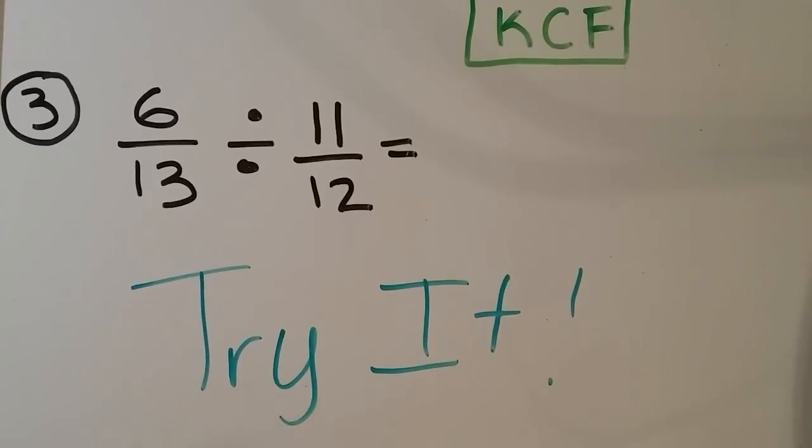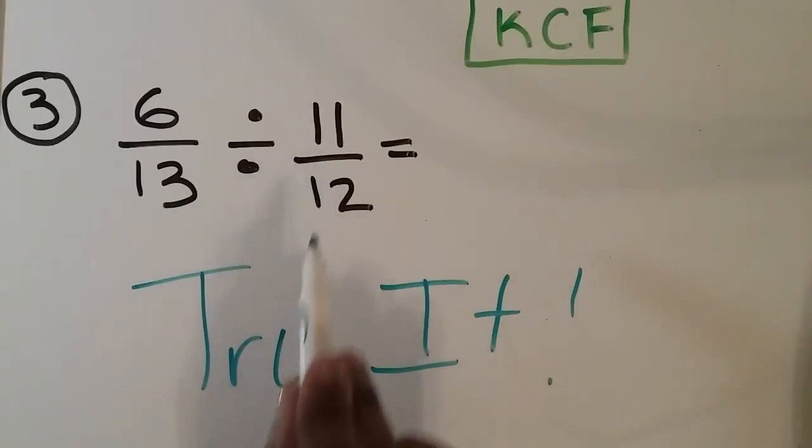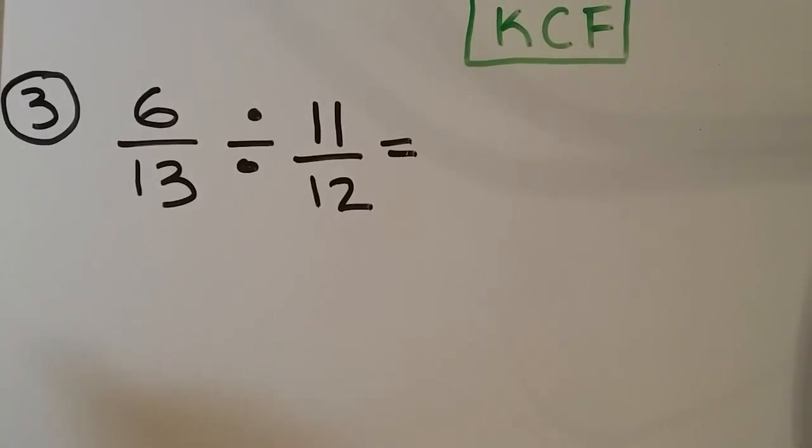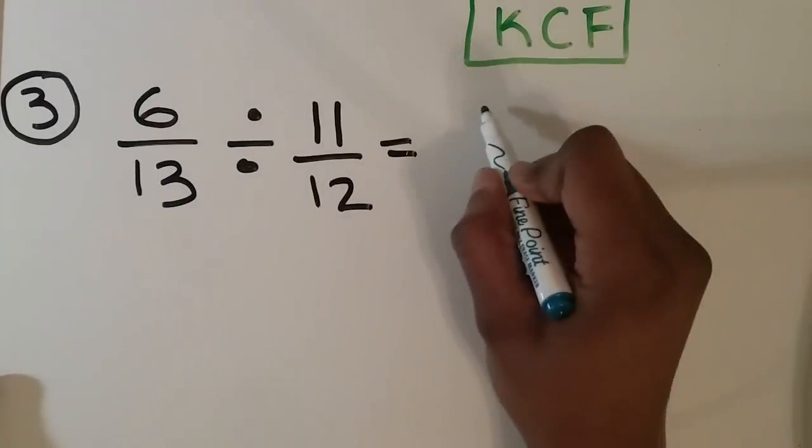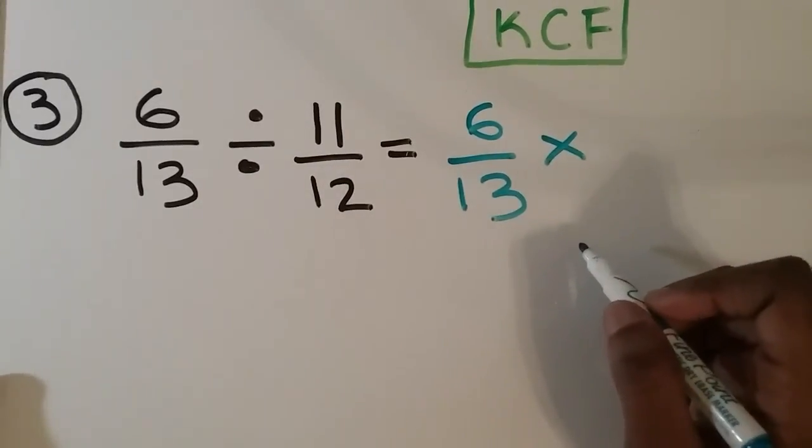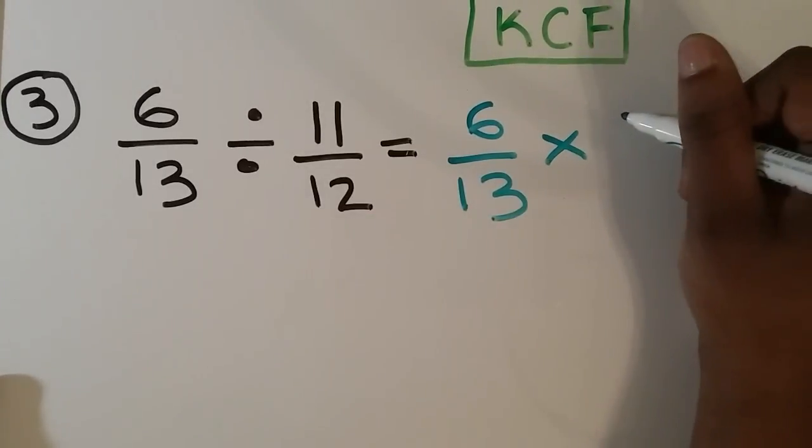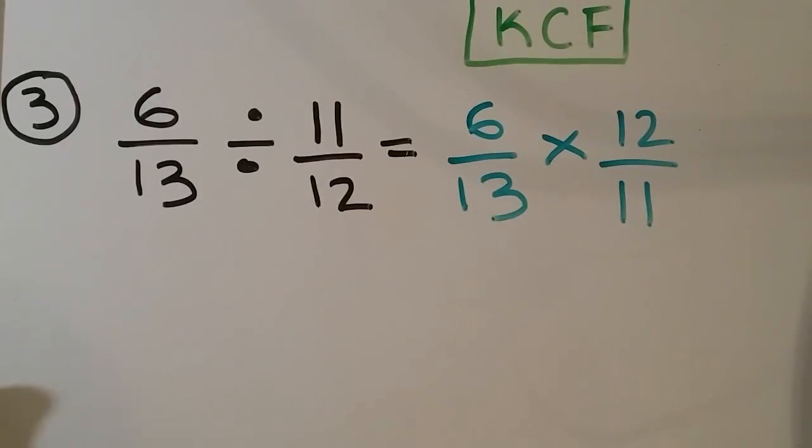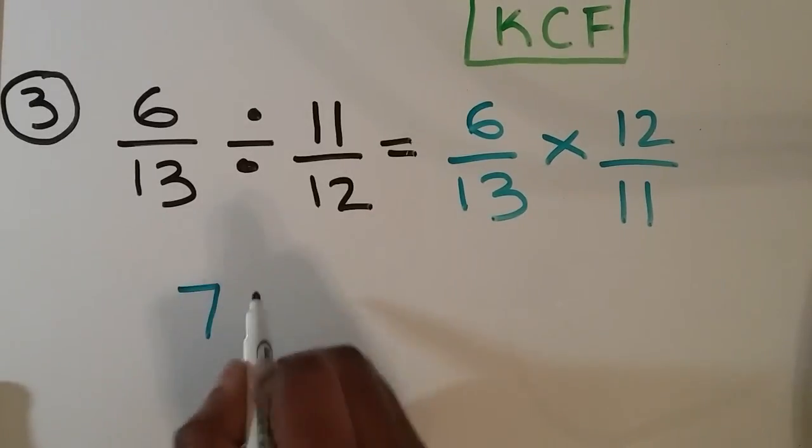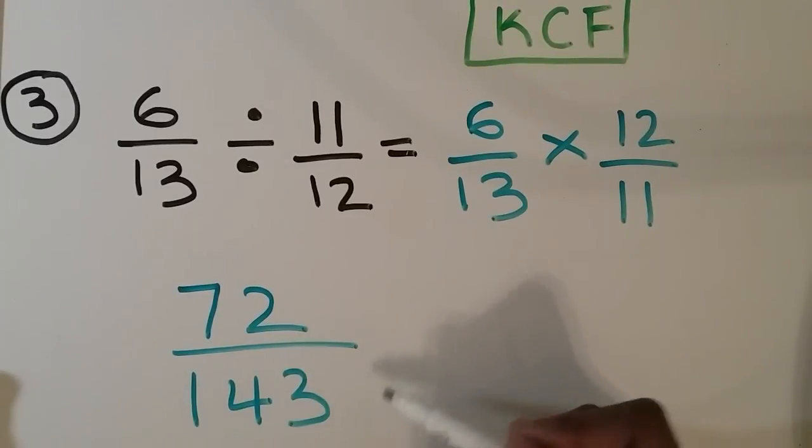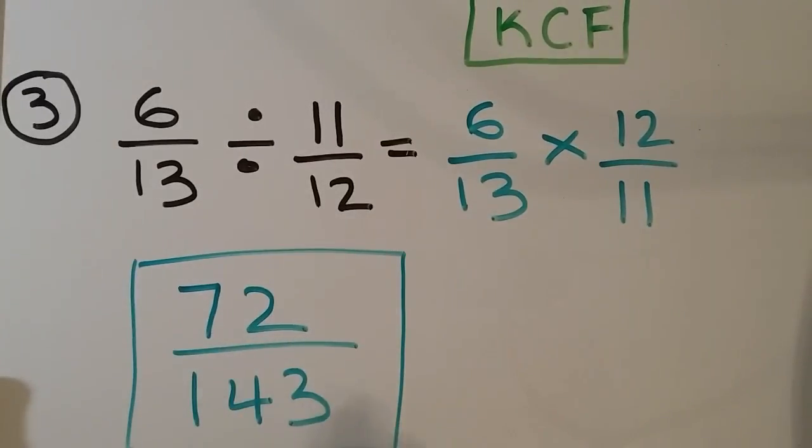Okay, so you can go ahead and try our last problem on your own: 6 over 13 divided by 11 over 12. And you can go ahead and pause right now. Okay, so we keep our first fraction the same, 6 over 13. Then we change our division sign to a multiplication sign and flip our last fraction. And this is the same as rewriting it as reciprocal. Now we multiply and we get 72 over 143. And this cannot be simplified anymore. I know it looks weird, but it's already simplified.